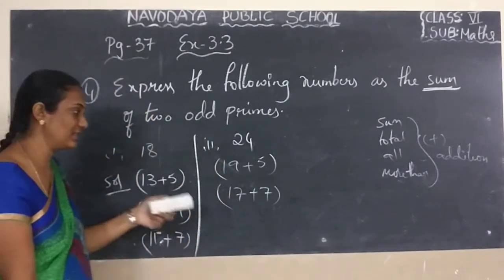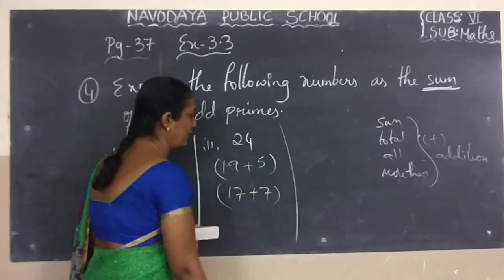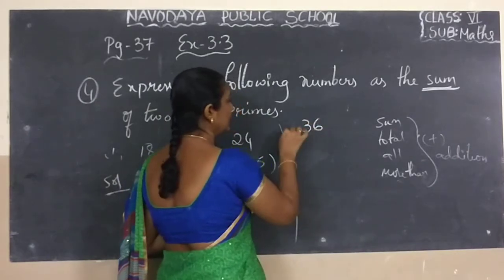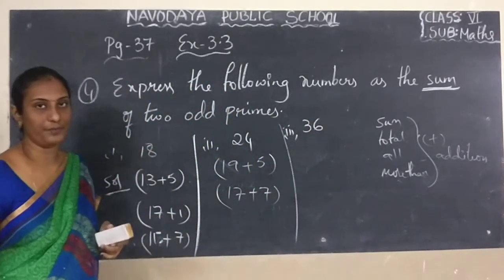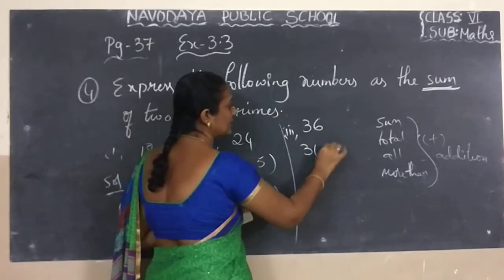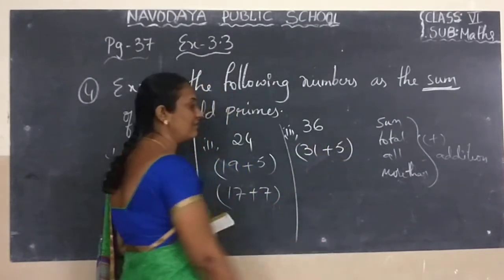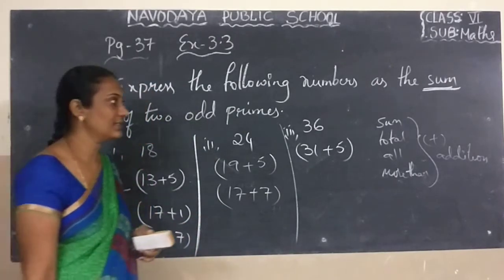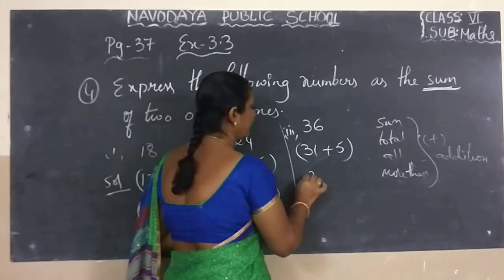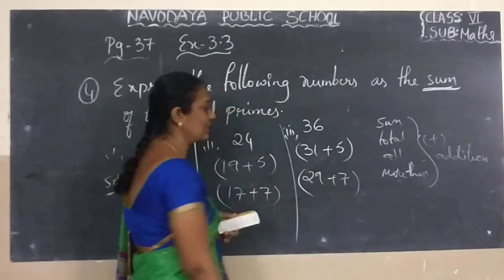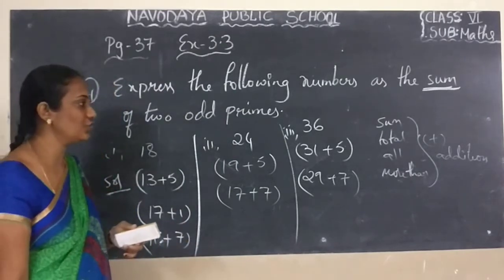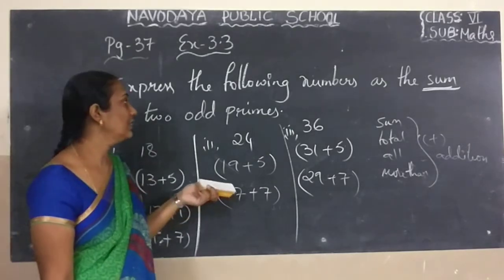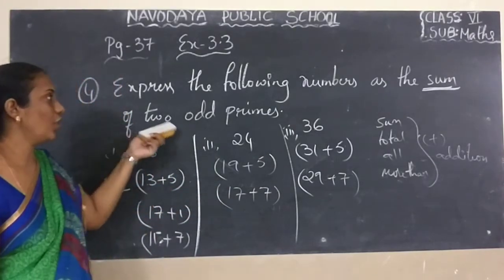Like this, we have to write some more examples. Next number is 36. For 36, same process: 31 plus 5. 31 is a prime number, 5 is a prime number. When you are adding these two prime numbers, we are getting 36. Next: 29 plus 7. 29 is a prime number, 7 is a prime number. When you are adding these two numbers, we are getting 36. Like this, we have to write the two odd primes.